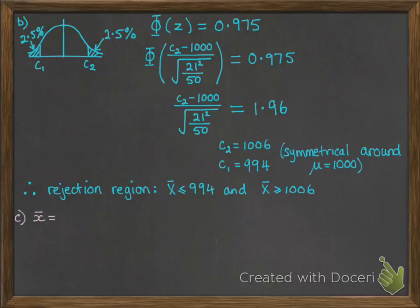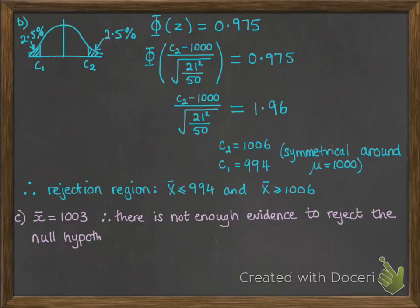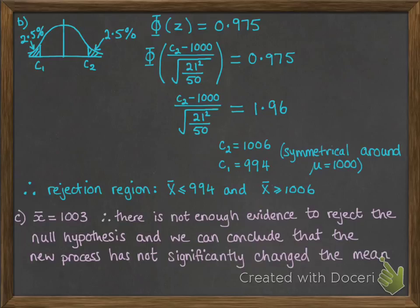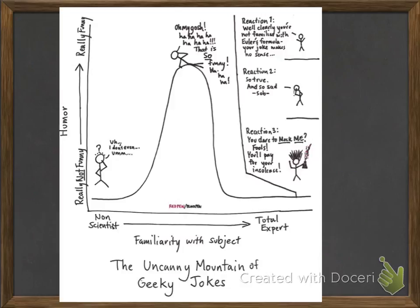So part C: our actual sample mean was 1003. Now this is not in either of those regions, it's not more than 1006 and it's not less than 994. So there's not enough evidence to reject the null hypothesis, and we can conclude that the new process has not significantly changed the mean.